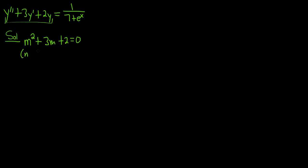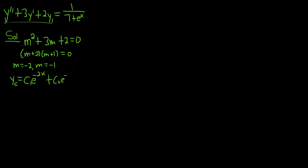This should factor. We need two numbers that multiply to 2 and add to 3 — so 1 and 2 do the job. That gives us m equals negative 2 and m equals negative 1.